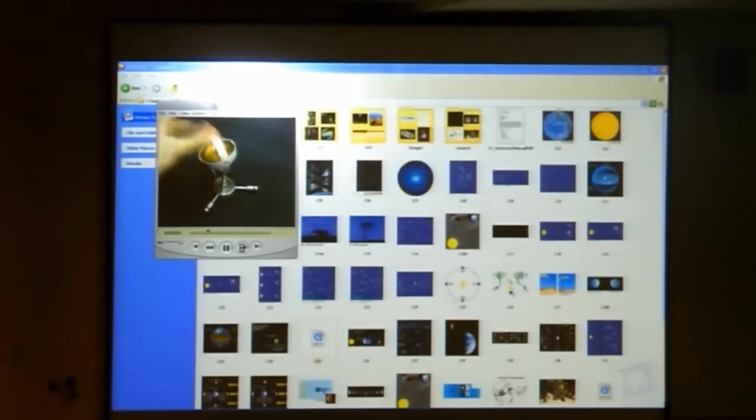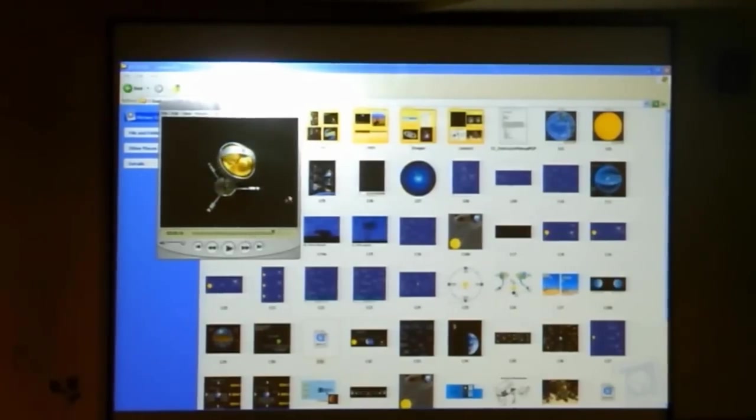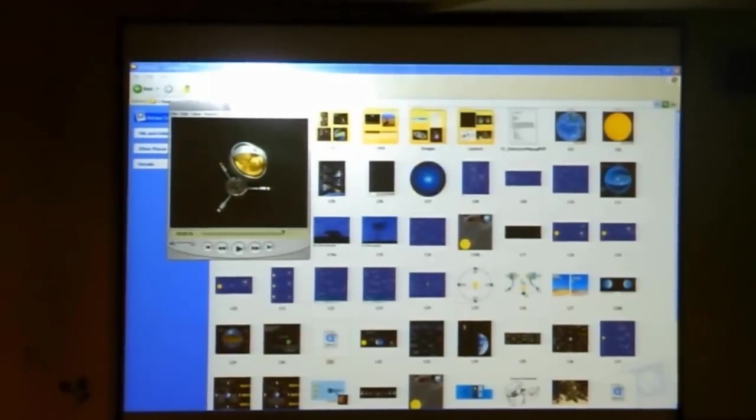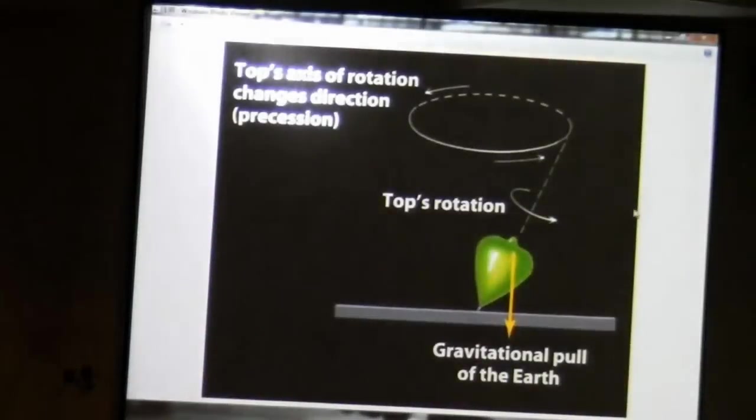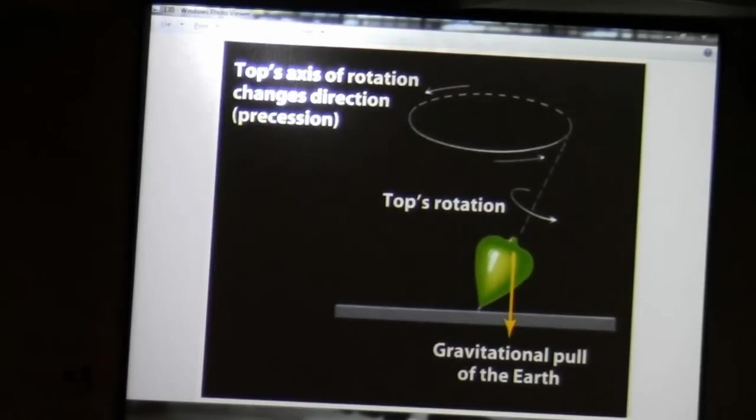So again, the gold thing is spinning so fast you can't even see it. But it's precessing as it goes. And just because it's not a spherical distribution and a force, the force of gravity is pulling in one direction.